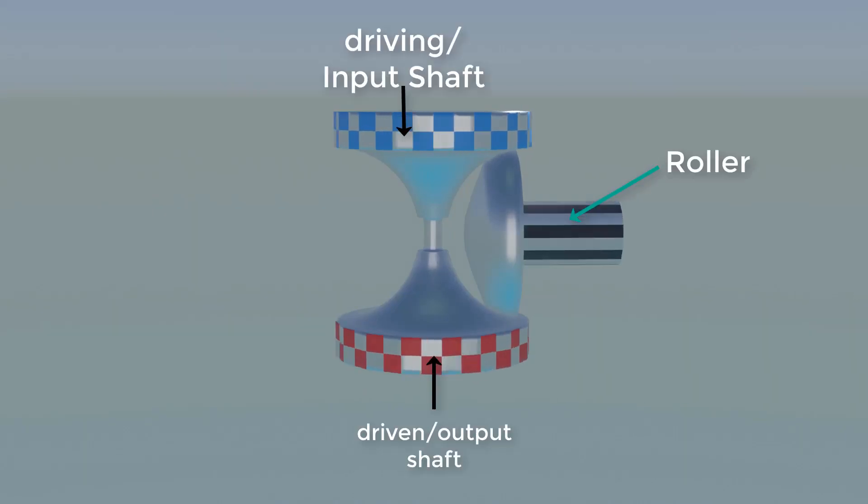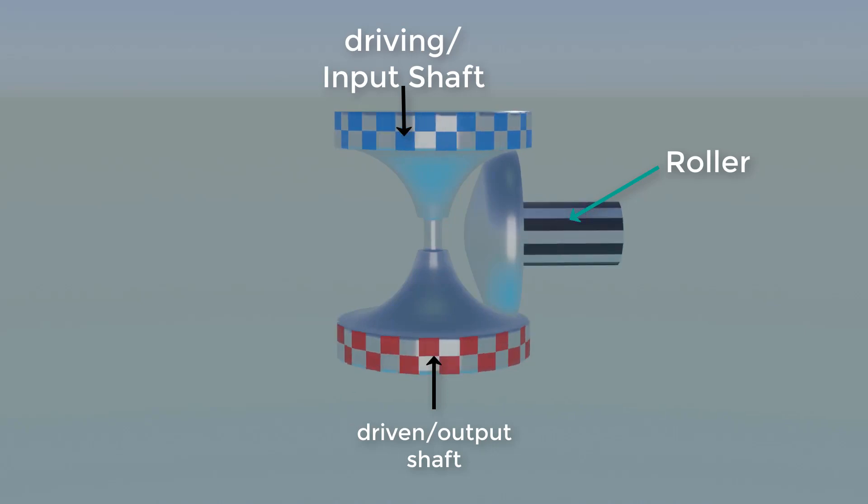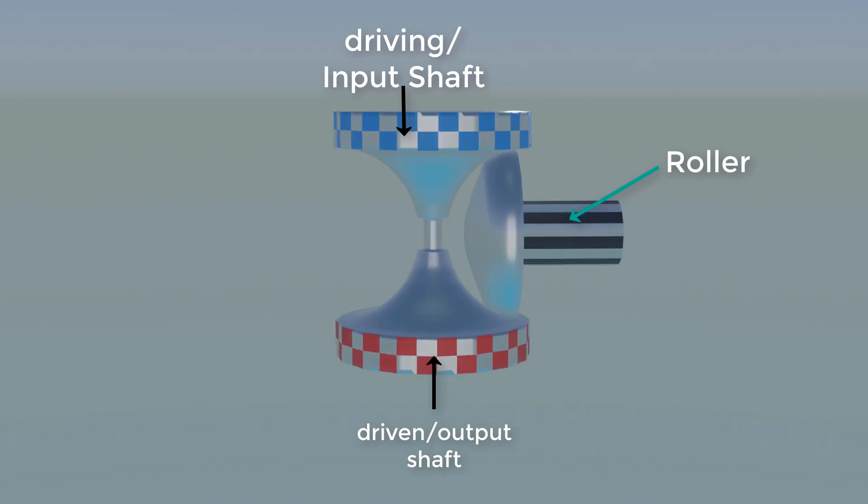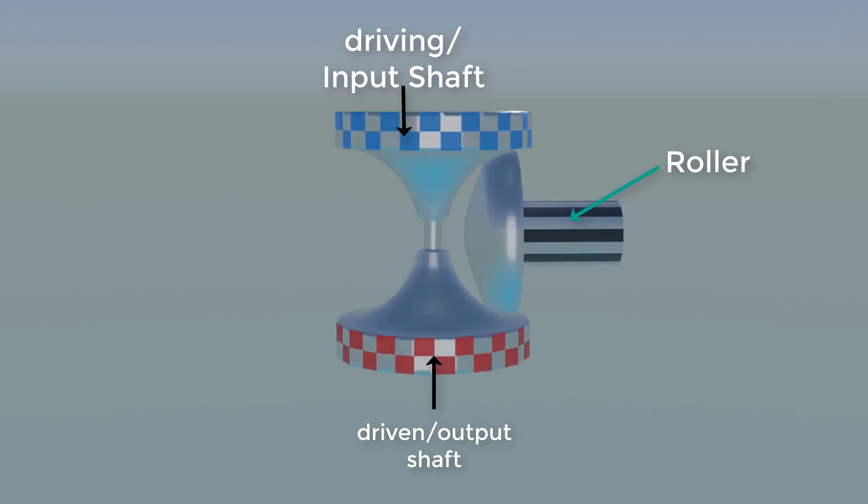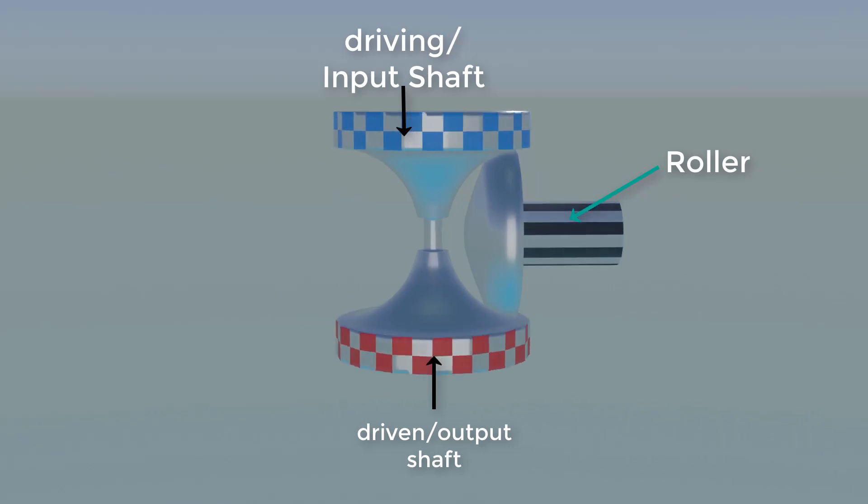Namaste, in this video we are going to learn how does toroidal CVTs work. Let's first see all the parts. It consists of three parts: one is input and output shaft, these are two planetary type of steerable rollers between two toroidal shaped discs, one is driven, other is driving.